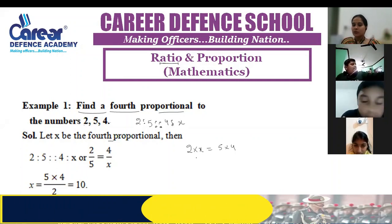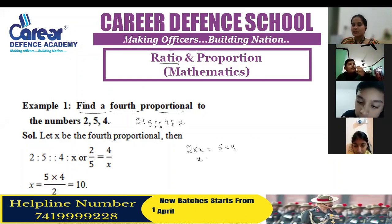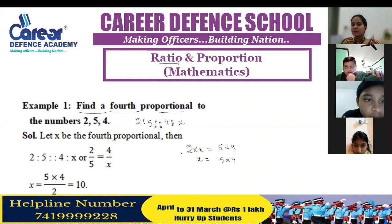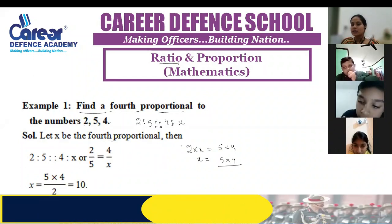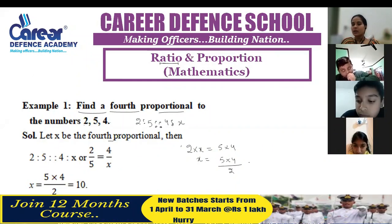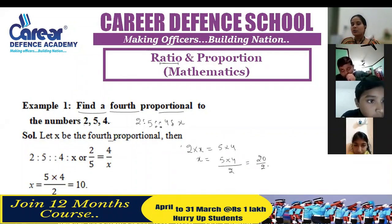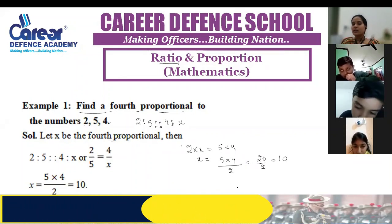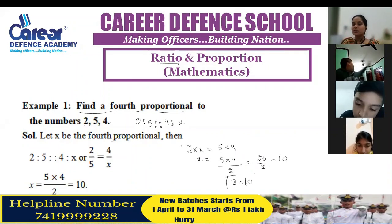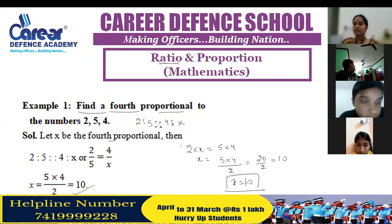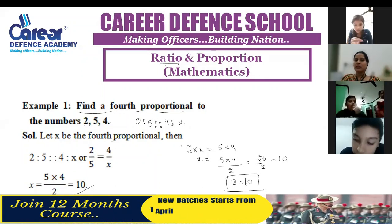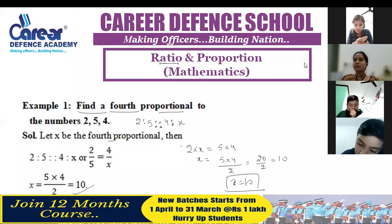Right? What is the value of x? 5 into 4 divided by 2. So 5 into 4 is equal to 20, divide by 2 gives 10. So the value of x — your fourth proportional — is 10.